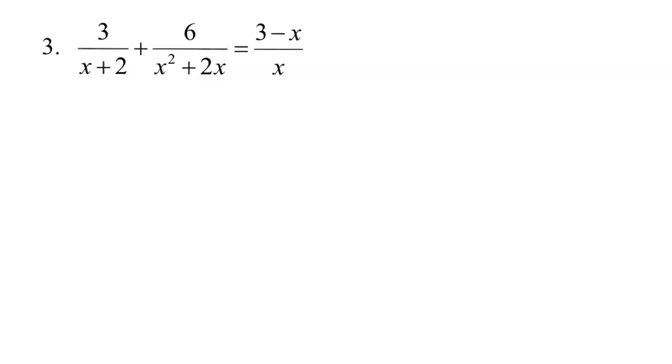Okay, in example three, again, we see that there is a denominator right here in the middle that is not currently factored, and so we need to factor it. It looks like I can take an x out of that, and it'll leave me with x plus 2. So I'm going to cross out the original denominator and put the factored version.